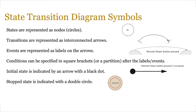State transition diagrams use various different symbols. States are represented as nodes, which are basically circles. Transitions are represented as interconnected arrows. Events are represented as labels on the arrows — for example, a remote button press is an event. Conditions can be specified in square brackets or a partition after the label. So in this case, if you press the remote button, the power is cut.